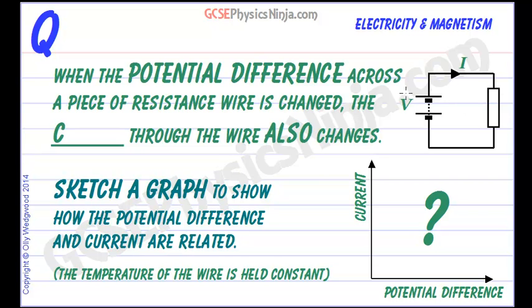So if you doubled the voltage or the potential difference across the component, it makes sense that you're doubling the pressure, you're doubling the flow, and therefore the current would be doubled.